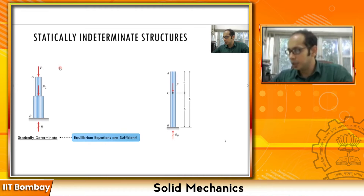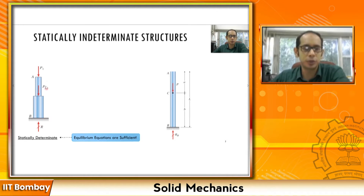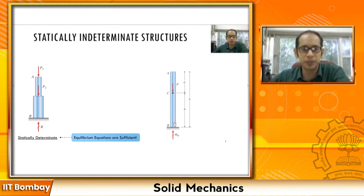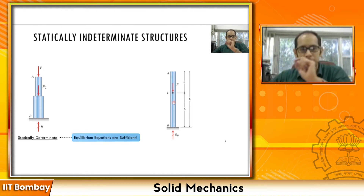In these particular structures you can easily calculate the reactions. For example, here R is simply P1 plus P2, and the reaction at point B is simply equal to this load P. While we are at this slide, can you guess the deformation of member AC? It is essentially not going to have any deformation at all, because all the internal stresses are in member CB.